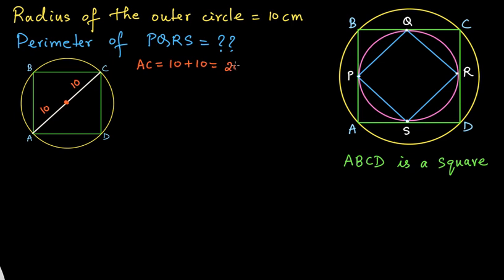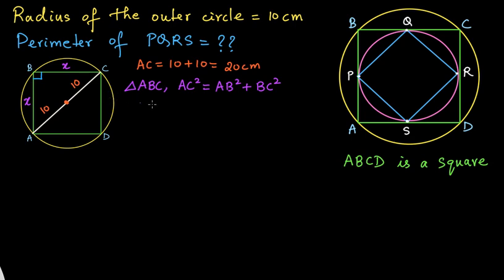Since ABCD is a square, angle B is a right angle. So we have right angle triangle ABC. Applying Pythagoras theorem: AC² equals AB² plus BC². Let the side length of the square be x, so BC equals x and AB equals x. Therefore AC² = 20² = x² + x².